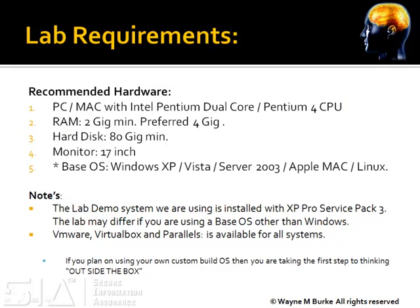For your requirements, we do recommend powerful enough hardware to actually get through the labs without any issues. You want to use a PC or a Mac with an Intel Pentium dual-core processor — a Pentium 4 should be fast enough. You want at least about 2 GB of RAM. For hard disk, the more the merrier, but nowadays an 80 GB is not very difficult to come by. A nice 17-inch monitor at least will be very helpful, and of course it depends on what base operating system you're going to use.